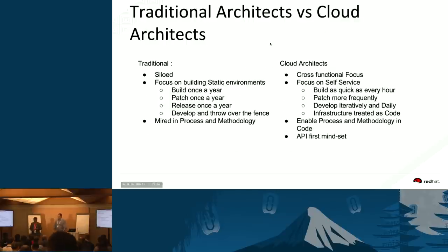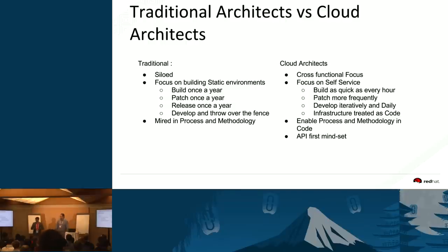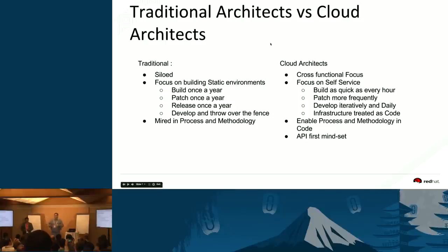How does a cloud architect differ from traditional architects? Traditional architects were siloed — a compute architect focused only on compute, a storage architect only on storage, a network architect only on routing and switching. They had different reporting lines and walls between them, which didn't support scalable, agile environments. A cloud or OpenStack architect needs to be flexible across all functional areas — understanding complex integrations of storage and networking vendors, how they interact, and how to meet actual business needs.